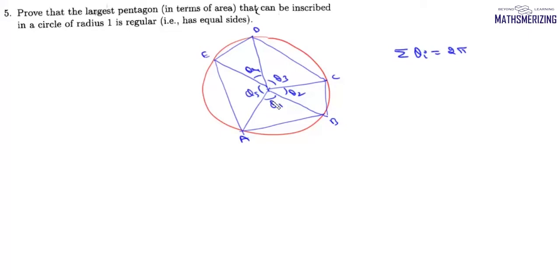Now we'll find area of any triangle, area of any triangle is given by one by two r square into sine theta i. So sum of areas of all these five triangles will give us area of this pentagon, area of this pentagon will be this summation delta i. So it'll be one by two, value of r is one, and then this summation sine theta i where i varies from one to five.